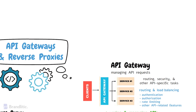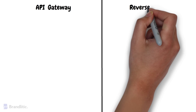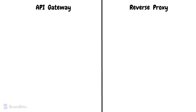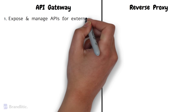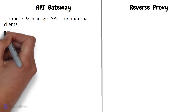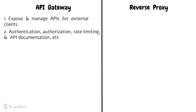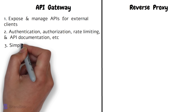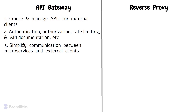When to use each one? The choice between API Gateway and a Reverse Proxy depends on your specific use case and requirements. You should use an API Gateway when you want to: number one, expose and manage APIs for external clients; number two, implement API-specific features like authentication, authorization, rate-limiting, and API documentation; number three, simplify communication between microservices and external clients in a microservices architecture.